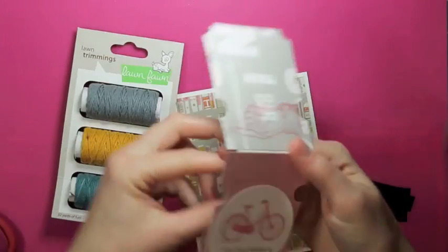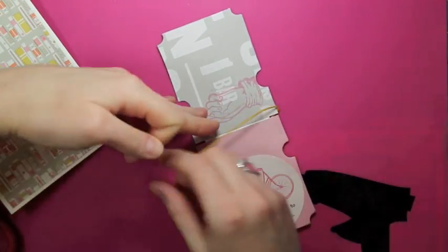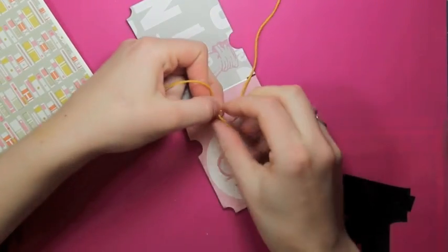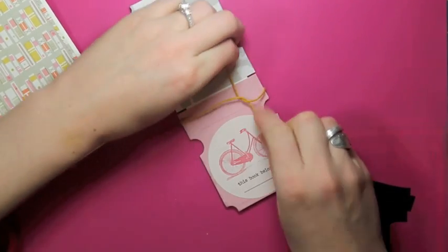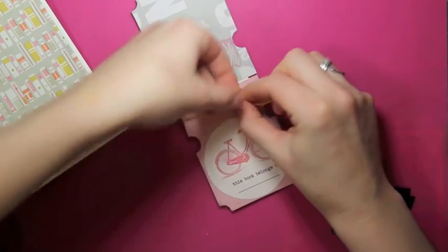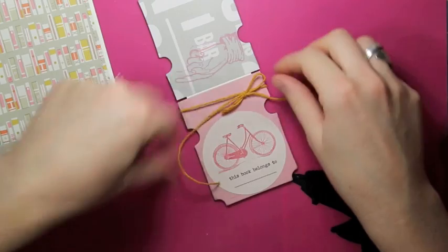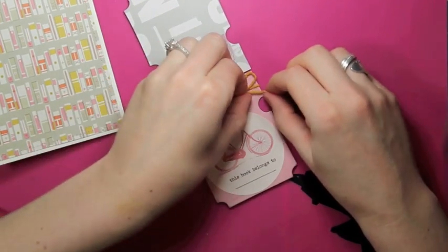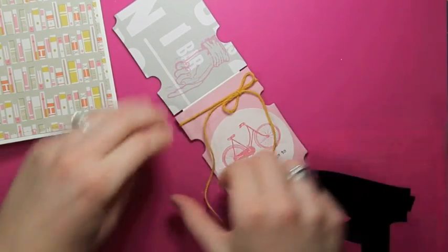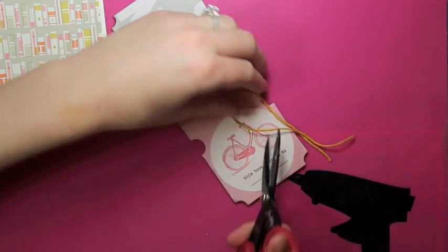So I'm just going to add a little bit of this to the top of our bookmark. Tie that in a bow here. And then I'm just going to trim the ends a bit.